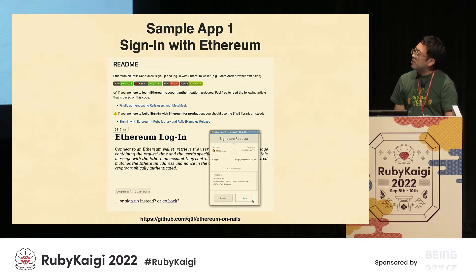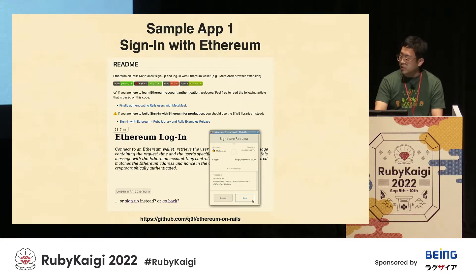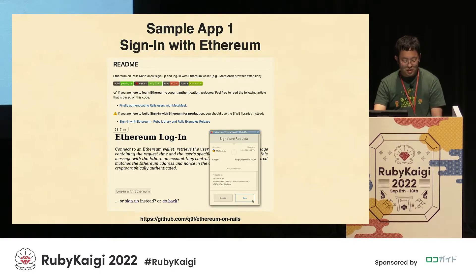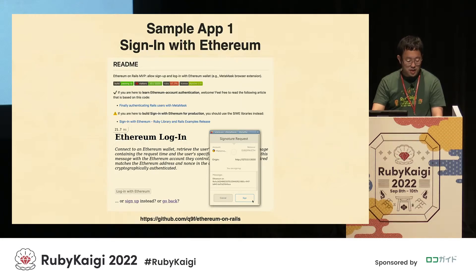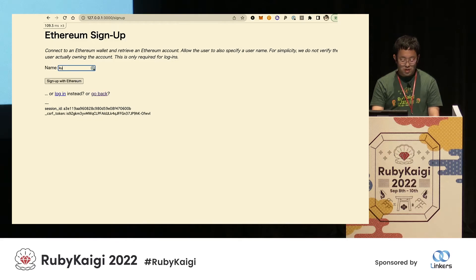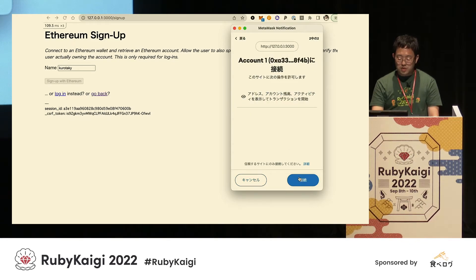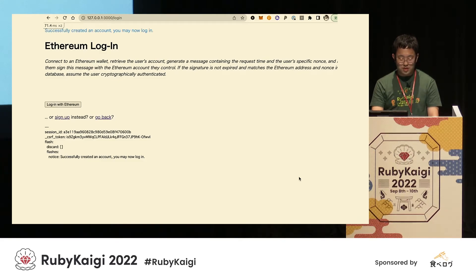This is a sample application. There is an Ethereum login sample application that you can try. This is a wallet such as MetaMask that enables sign up and log in. Users can log in without managing passwords on the web application. This is an Ethereum authentication demo. MetaMask notification — this is sign up.